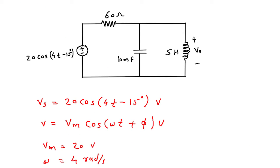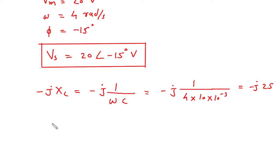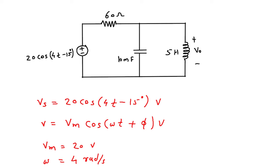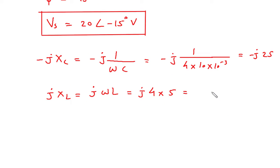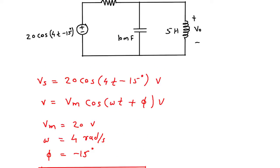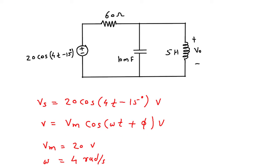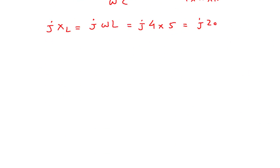Then this will be the inductive impedance jXL = jωL. ω is again 4, and L is given as 5 Henry. So jXL = j×4×5 = j20. And this is the resistance R.